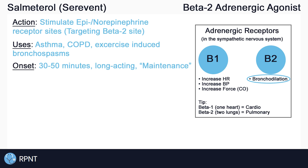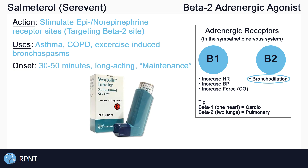A rescue inhaler, such as salbutamol, also known as albuterol or Ventolin, should be administered for acute asthma attacks. However, salmeterol can be administered 30 minutes prior to exercise to prevent exercise-induced bronchospasms.